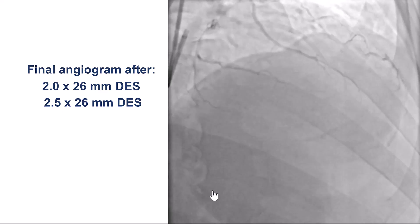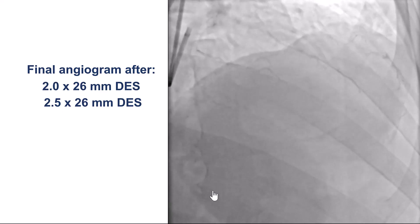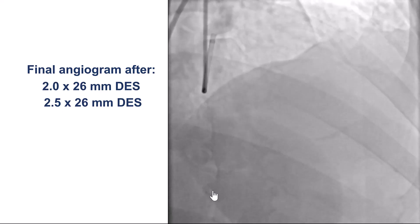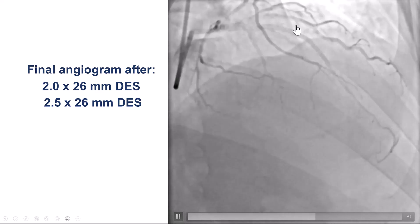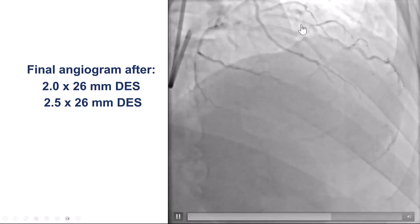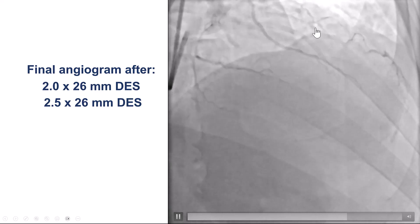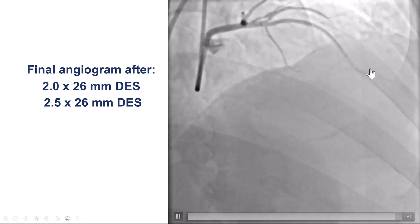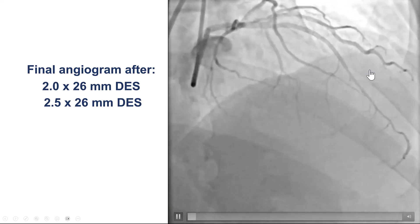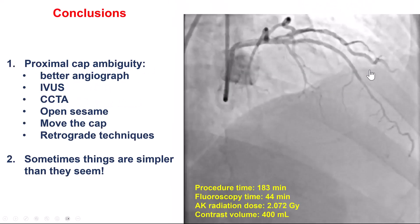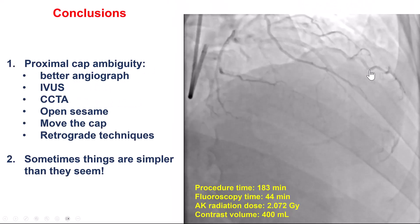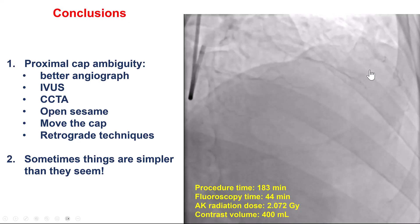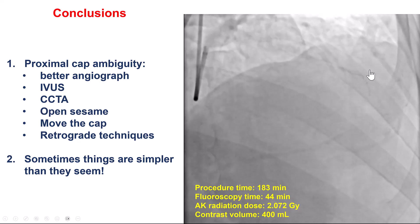After this, the lesion was predilated and successfully stented. We unfortunately had a hard time getting into the diagonal at the distal cap, so that branch remained occluded after we placed stents. But we did have a nice final result, and the patient had resolution of the angina.